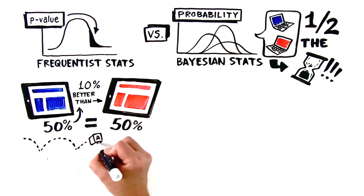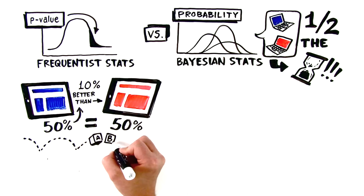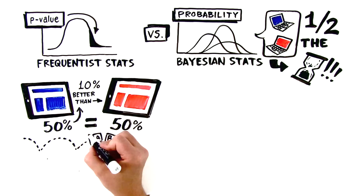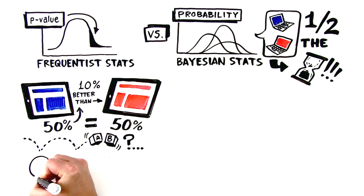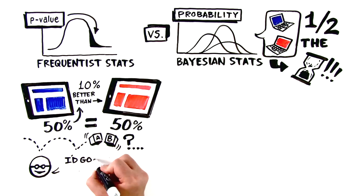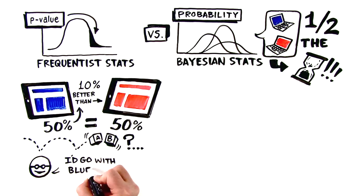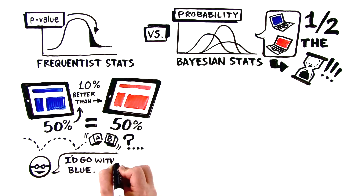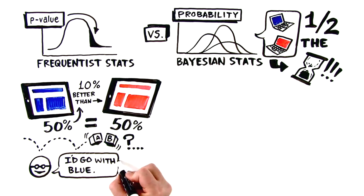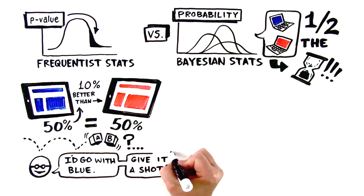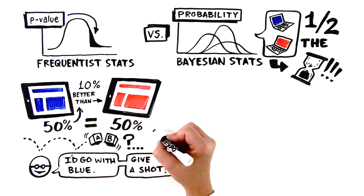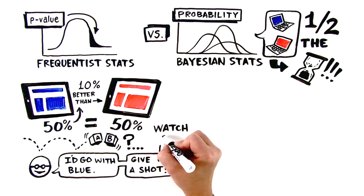Now, when uncertain, traditional A/B testing tools will simply tell you to keep testing or that the test is inconclusive. But SmartStats helps you make the smart business decision by recommending that you deploy the blue web page, since you actually stand to gain something and not lose anything.